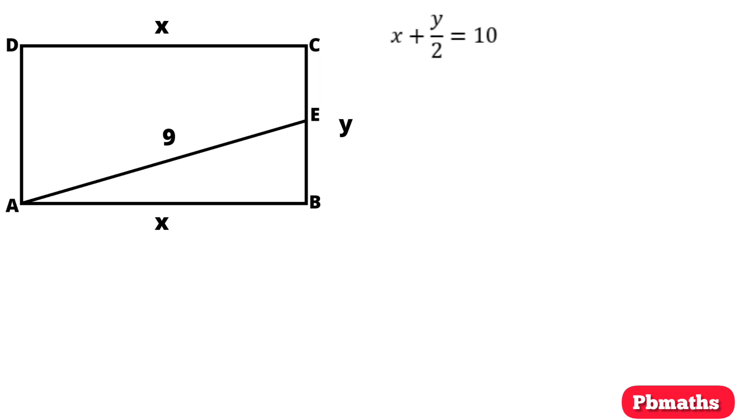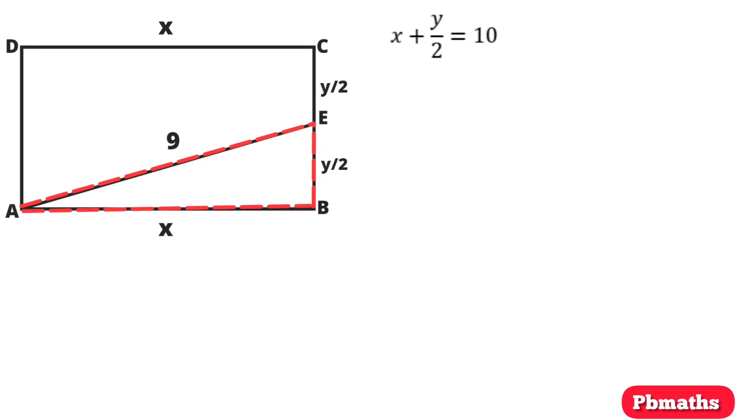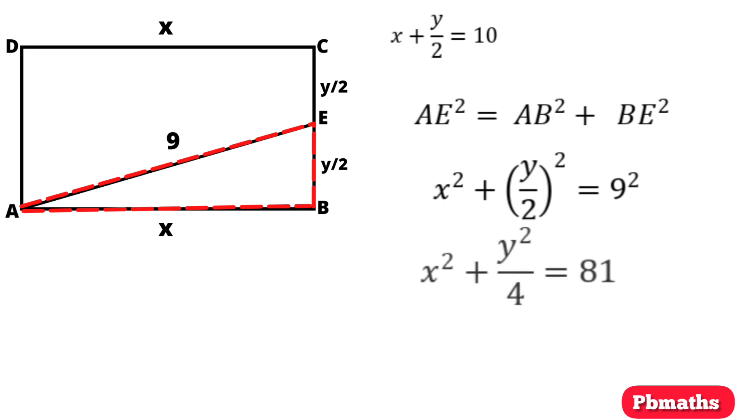Now, let's concentrate on the right angle triangle ABE. With the help of Pythagoras theorem, we can write AE square equals AB square plus BE square. On that basis, we can write X square plus Y by 2 whole square equals 9 square. X square plus Y square by 4 equals 81.